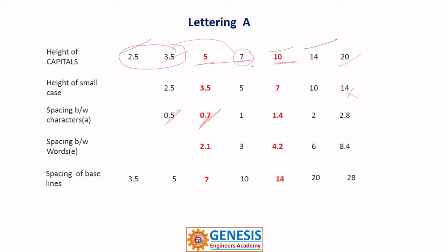Suppose if you take this 7, we generally follow 7 and 5. In our learning process we generally follow 5, 7. If the height of the text is 7, the space between characters is 1 and the space between words is 3. The spacing of baselines is 10. I will explain all these things again. This is lettering A. If you are asked to follow lettering A, you must follow. If you do not follow and even if you write clearly, you will not get marks.